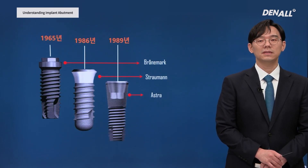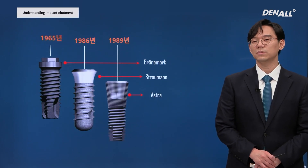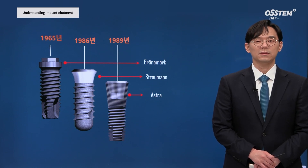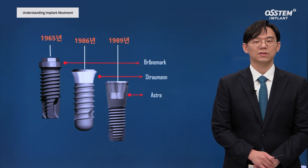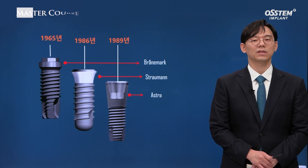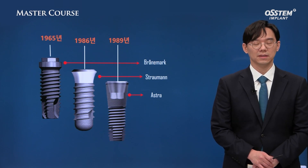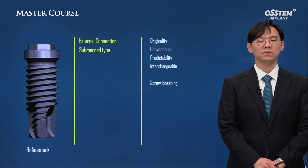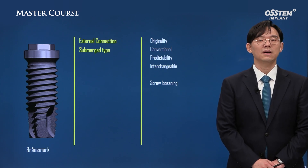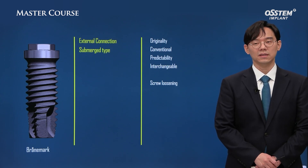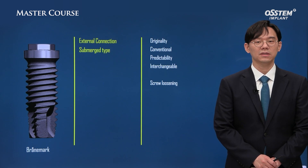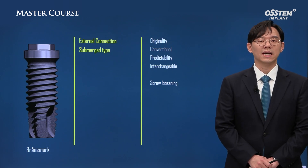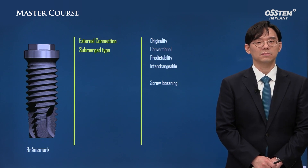Brånemark implant was introduced in 1965. Twenty-one years later, Straumann implant was introduced in 1986, and thereafter, in 1989, Astratech implant was launched. Brånemark implant is external connection and submerged type, used to fixate lower denture. It has originality and has been used long term, so long-term stability is well established.